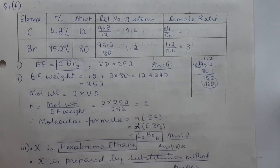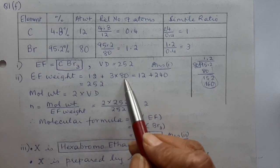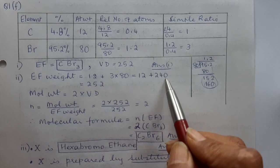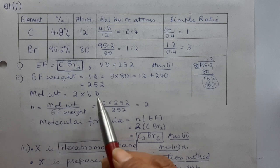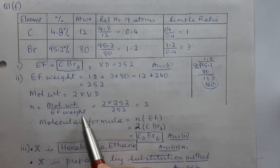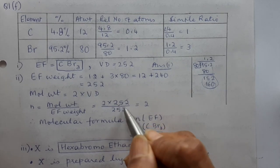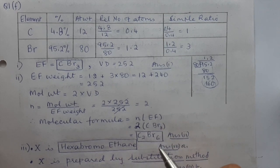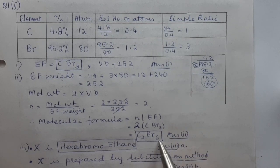To find the molecular formula: empirical formula weight = 12 + (3 × 80) = 12 + 240 = 252. Molecular weight = 2 × vapour density = 2 × 252 = 504. n = molecular weight ÷ empirical formula weight = 504 ÷ 252 = 2. Molecular formula = n × empirical formula = 2 × CBr₃ = C₂Br₆.